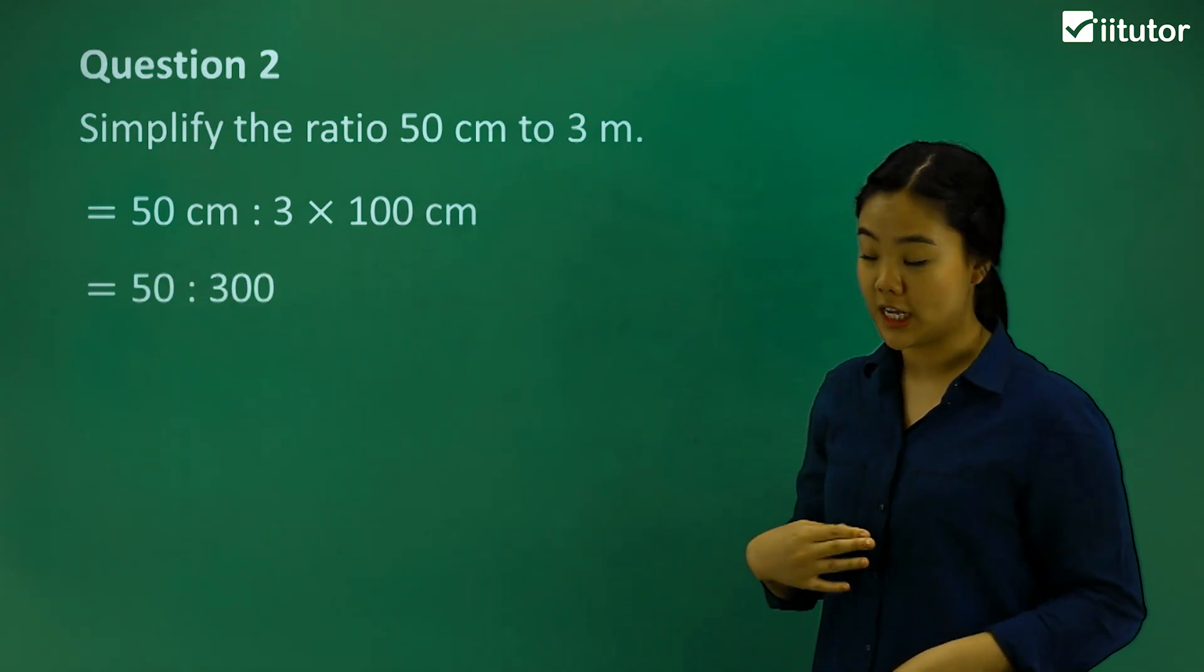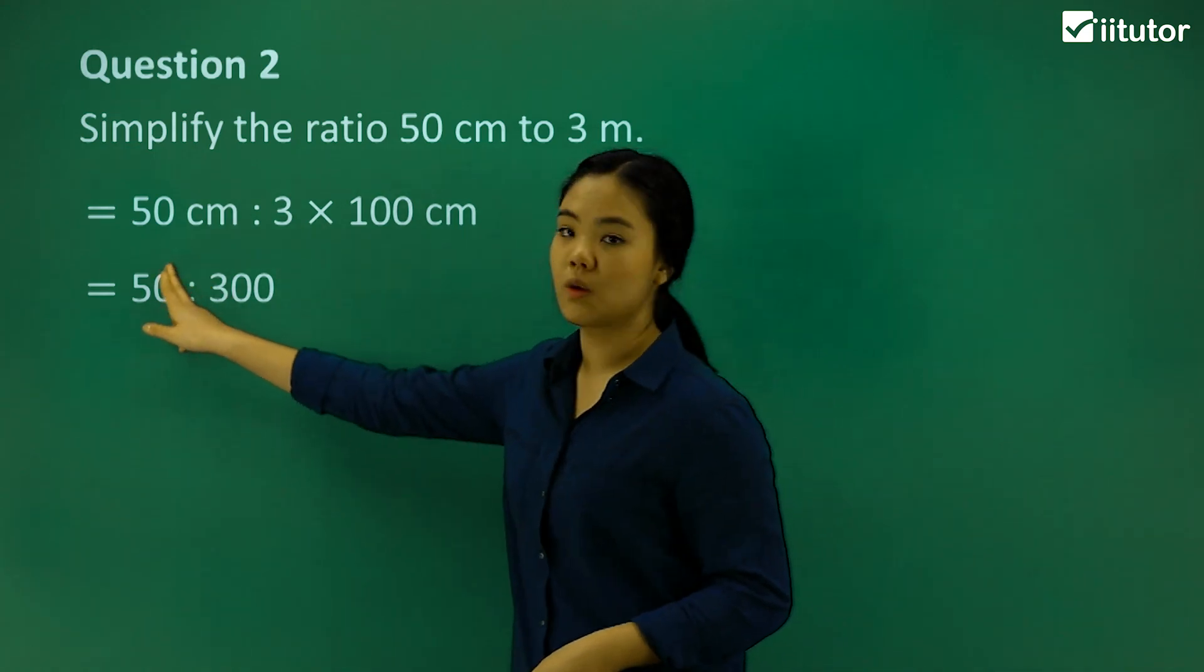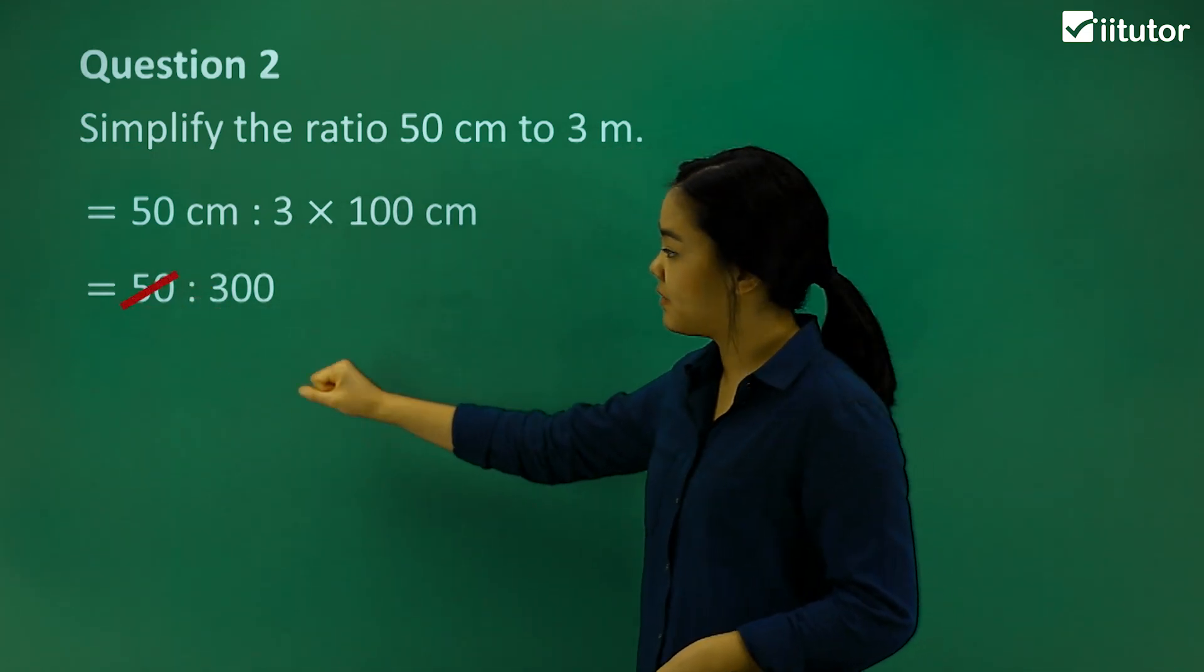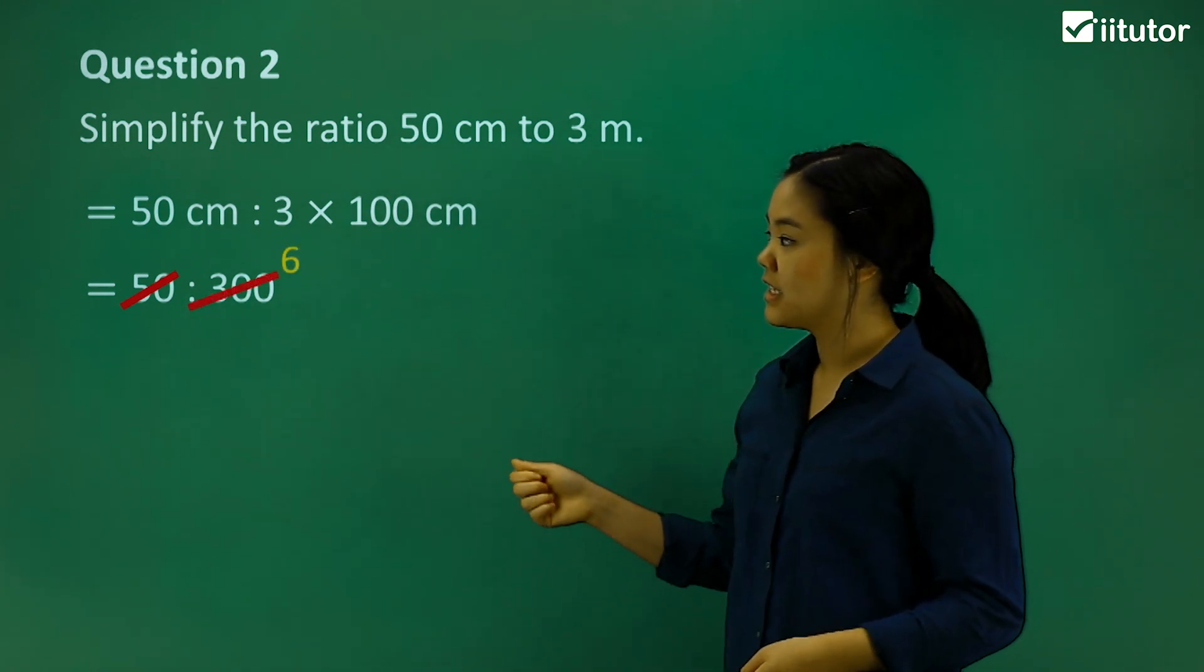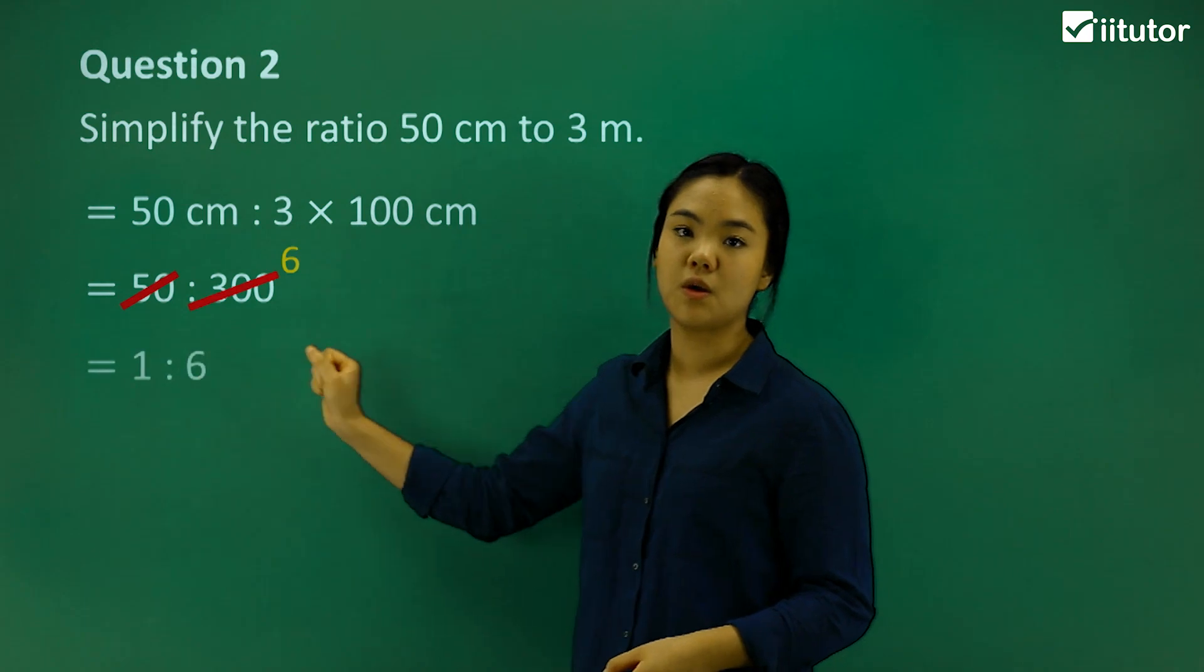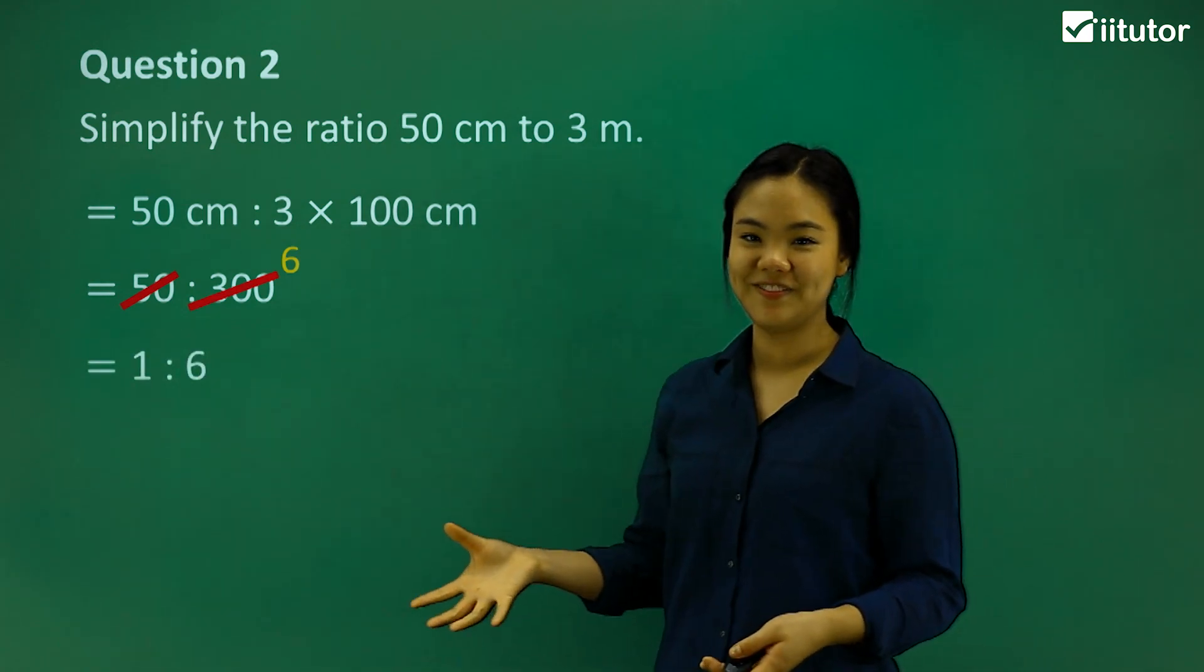Again, we want to simplify that further. We can divide that by 50, which is 1, and divide 300 by 50, and that's 6. So the ratio is 1 to 6.